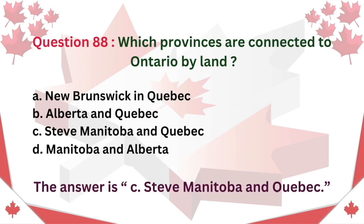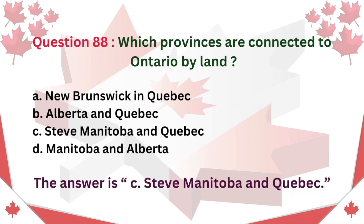Question 88: Which provinces are connected to Ontario by land? A. New Brunswick and Quebec. B. Alberta and Quebec. C. Manitoba and Quebec. D. Manitoba and Alberta. The answer is C. Manitoba and Quebec.